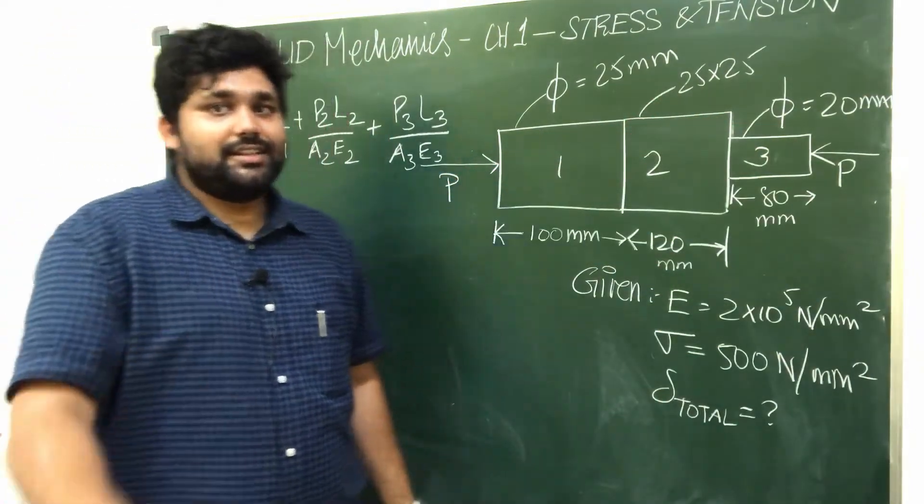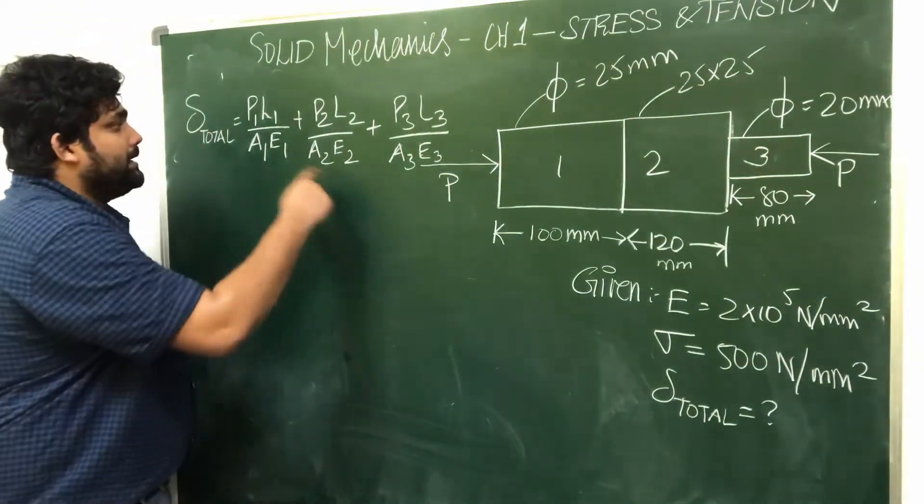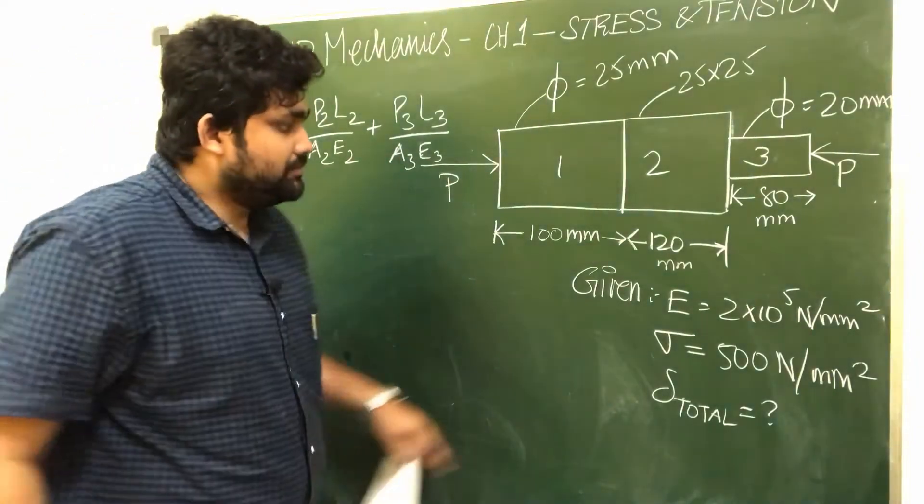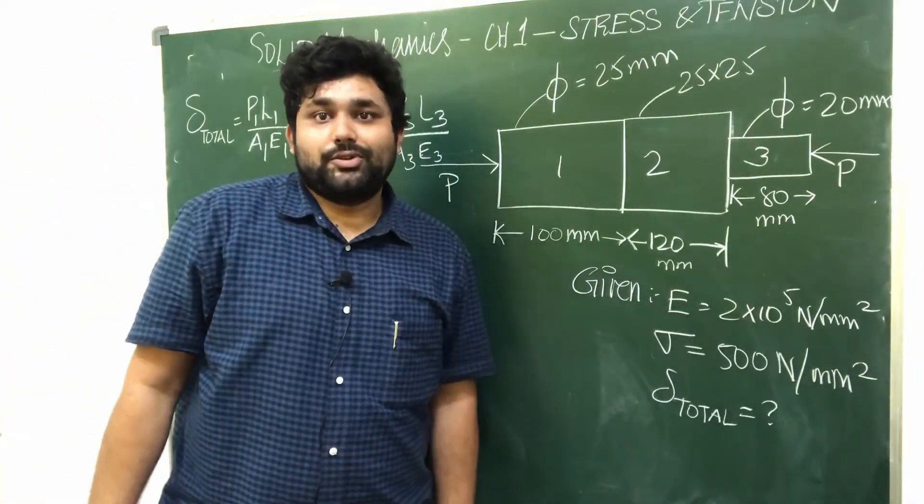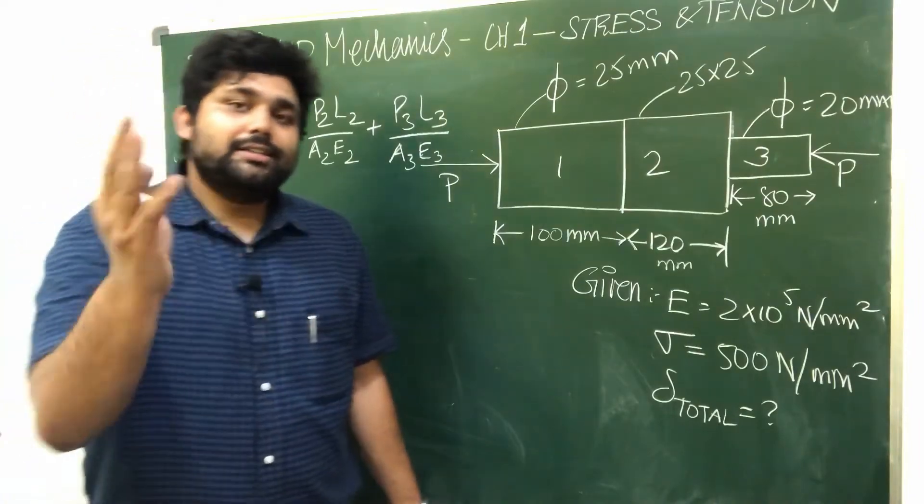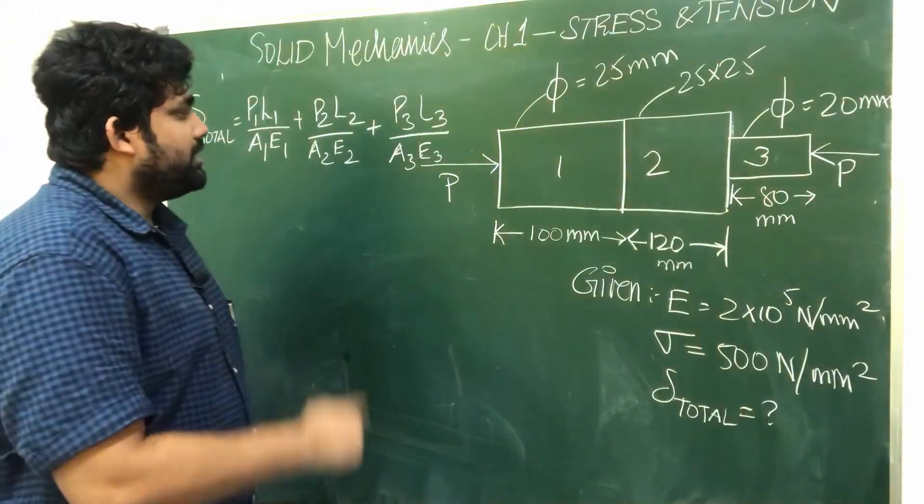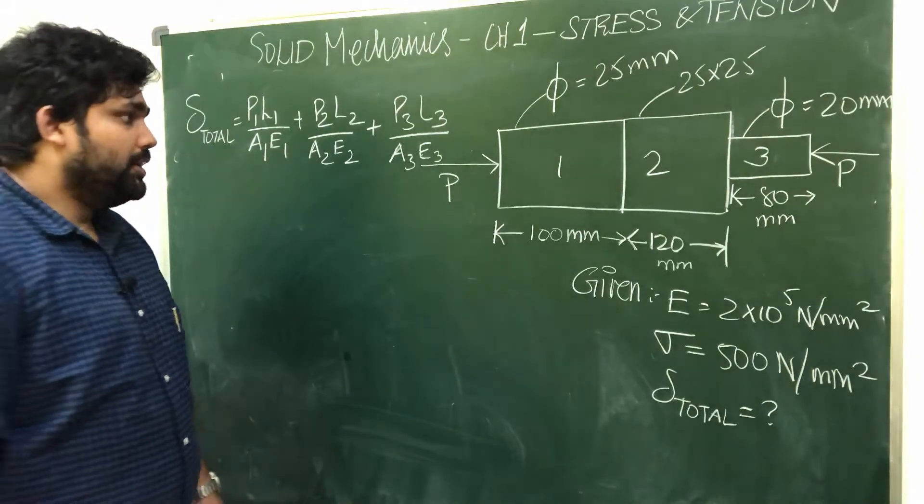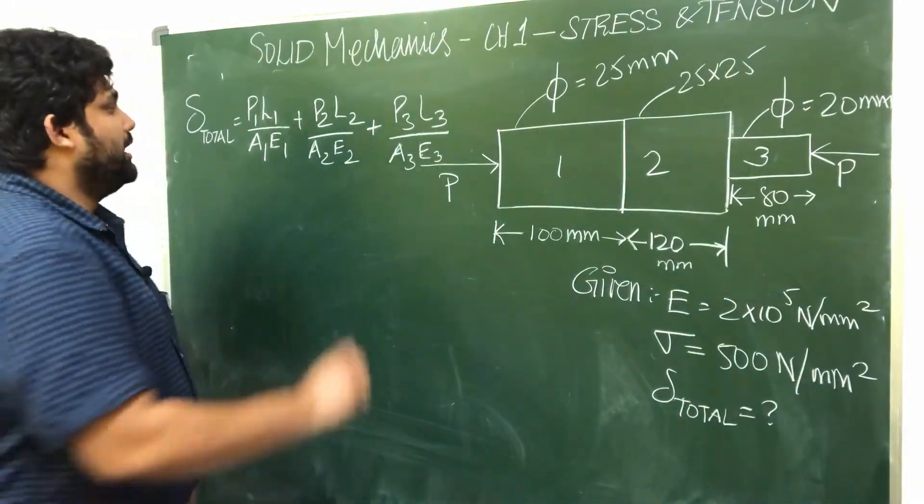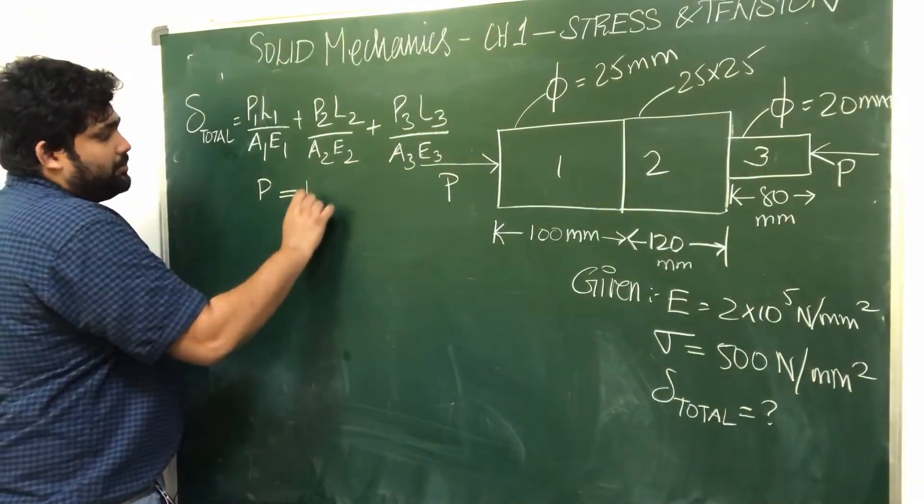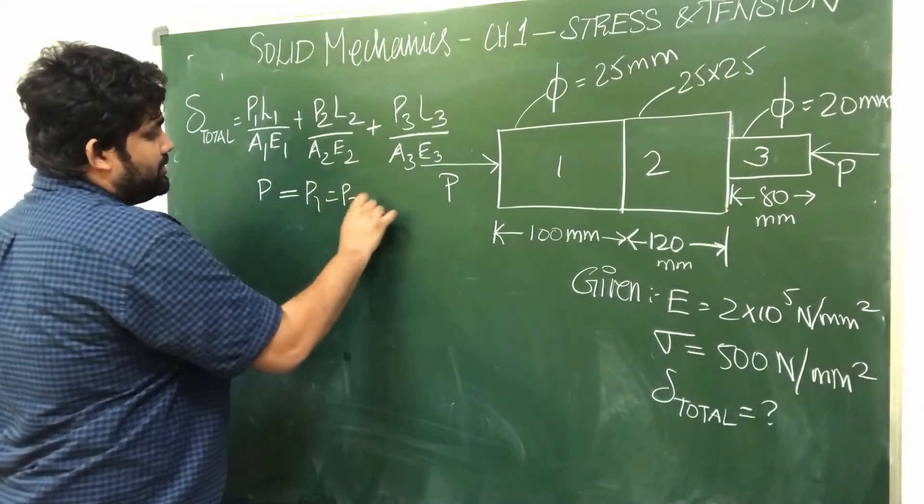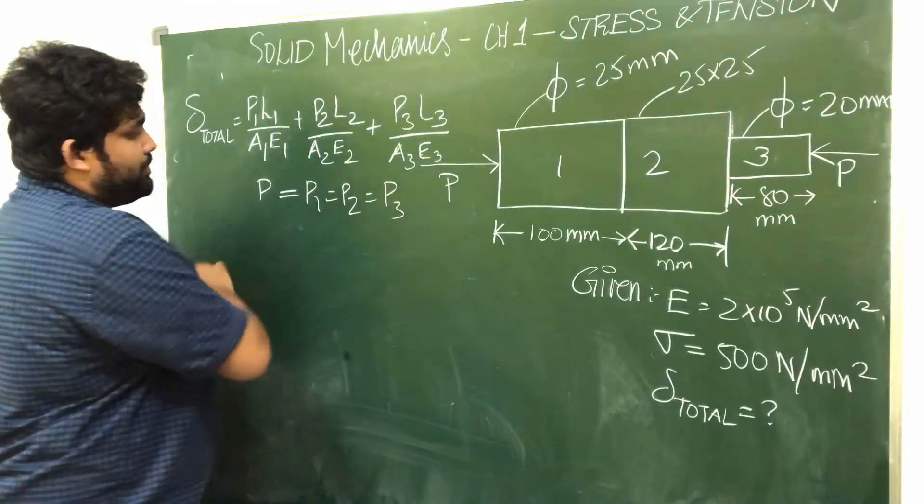So this is A1, A2, A3. E is common, so this is same material, so this is a value of 2x10^5. But this is the problem that we have to solve - P1, P2, P3 is common. So P1 is equal to, P2 is equal to, P3 is equal to P.